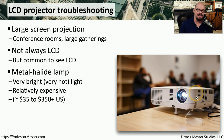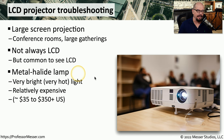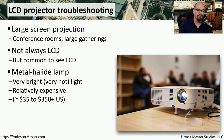Inside of these projectors is a very bright lamp. That's what allows everyone in the room to see the information being shown on the wall. The light on the inside is a metal halide lamp, which is a very bright lamp that allows everyone to see the output. Because it's a very bright light, it tends to also be a very hot light. These lamps can also be expensive to replace, with the cost going up as high as $350 to replace one lamp inside of these devices.